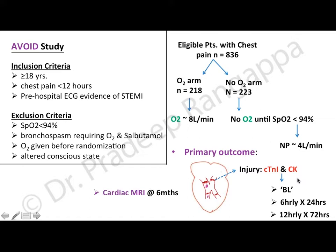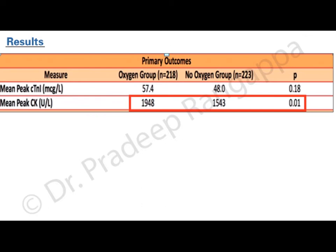For all patients, cardiac MRI was done at six months to assess the extent of myocardial injury. The results were very striking — negating the use of oxygen in acute coronary syndrome. The peak creatinine kinase in the oxygen group was very high at 1948, as opposed to the no-oxygen group where it was much lower, and that was statistically significant.